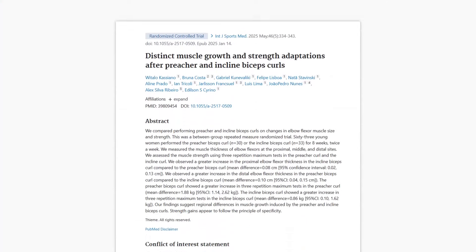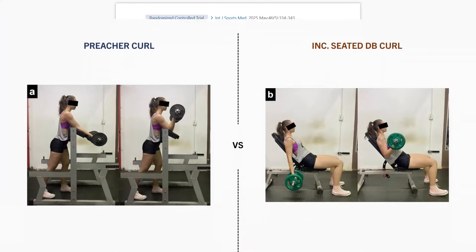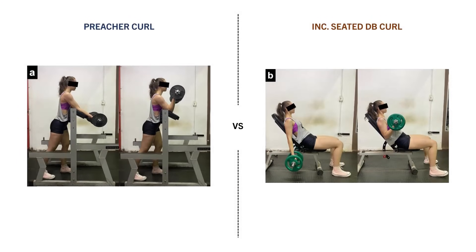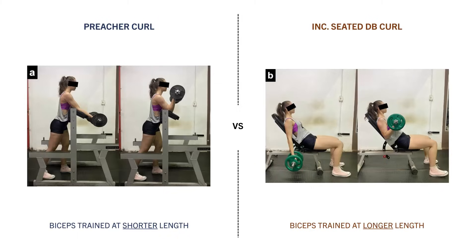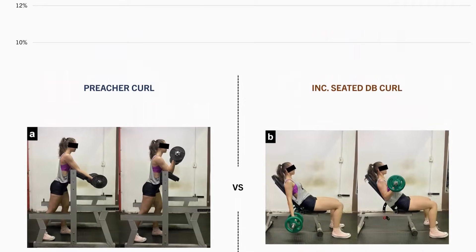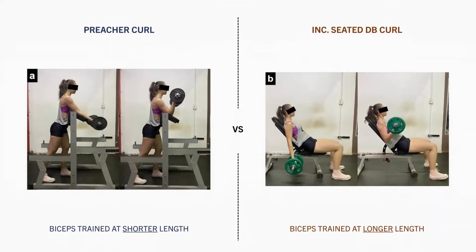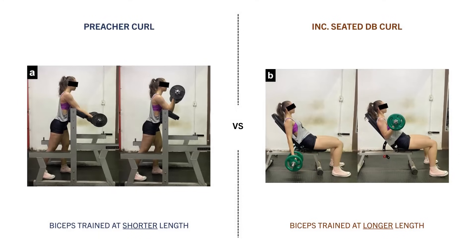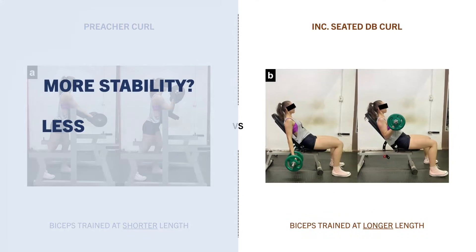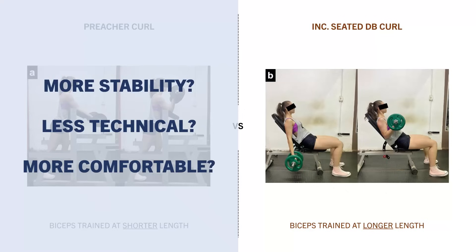Furthermore, this study compared the effects of preacher curls versus incline-seated dumbbell curls on biceps hypertrophy. The biceps are trained at a shorter length in the preacher curls but at a longer length during the incline-seated curls. However, overall increases in biceps muscle thickness were similar after both variations. So despite the seated curls training the biceps in a more stretched state, muscle growth outcomes were similar. This could be due to the preacher curl being more stable, easier to perform, more comfortable, or any other reason.